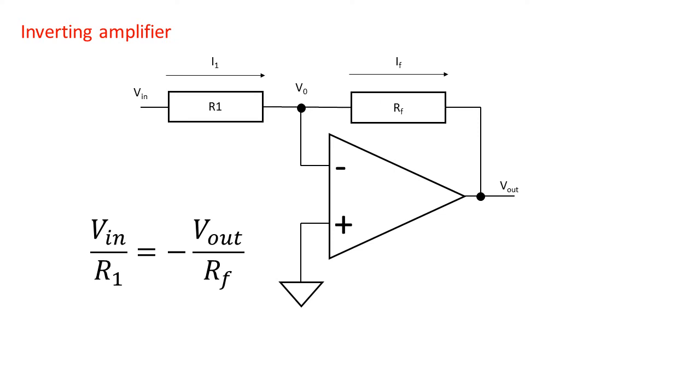Now the transfer function or gain of this circuit is equal to the output voltage over the input voltage. With a bit of algebra the formula can now be rearranged to Vout over VIN equals negative RF over R1.